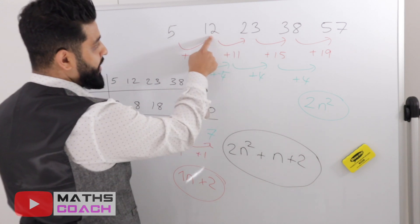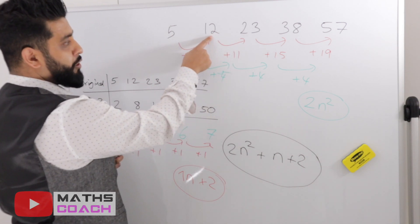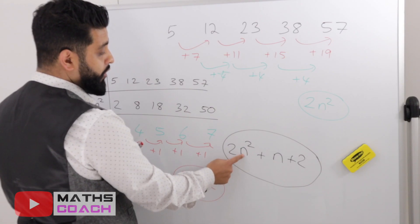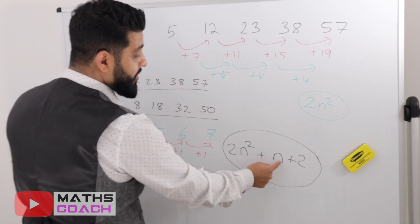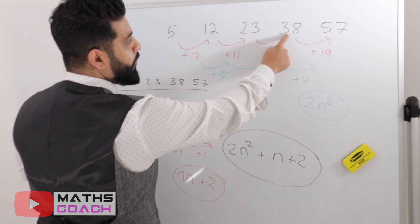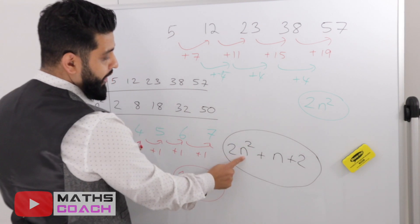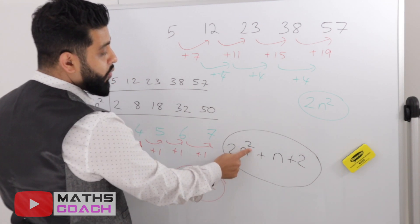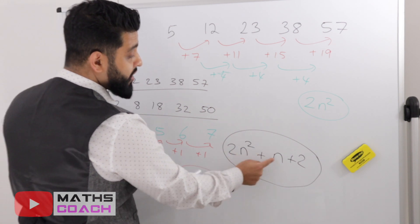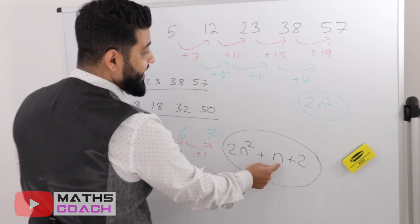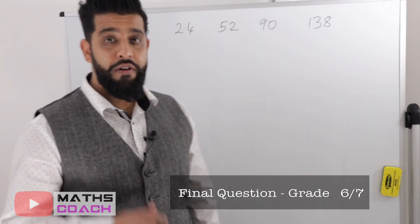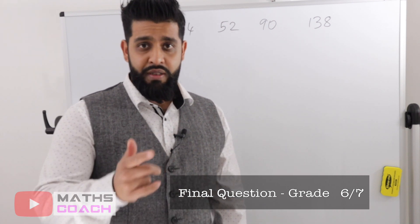Putting it together: 2n squared plus n plus 2. Let's test it. For the second term, n equals 2: 2 squared is 4, times 2 is 8, plus 2 is 10, plus 2 is 12. Correct. For the fourth term, n equals 4: 4 squared is 16, times 2 is 32, plus 4 is 36, plus 2 is 38. Correct.